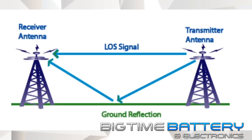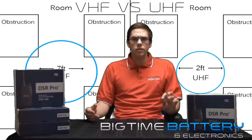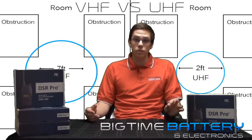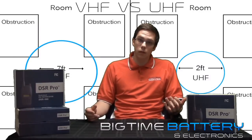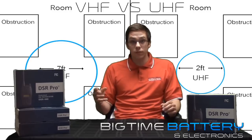In layman's terms, look at the picture displayed: a signal lost through the original output via line of sight is dispersed toward the ground reflection, where it is ultimately sent back to the desired destination. To conclude, radio waves in the UHF band travel almost entirely by line of sight propagation or LOS and ground reflection.